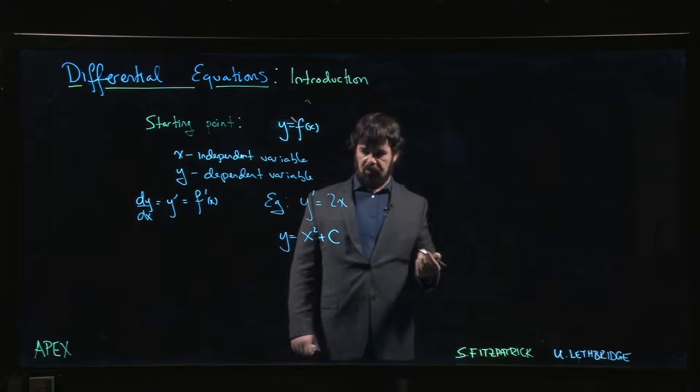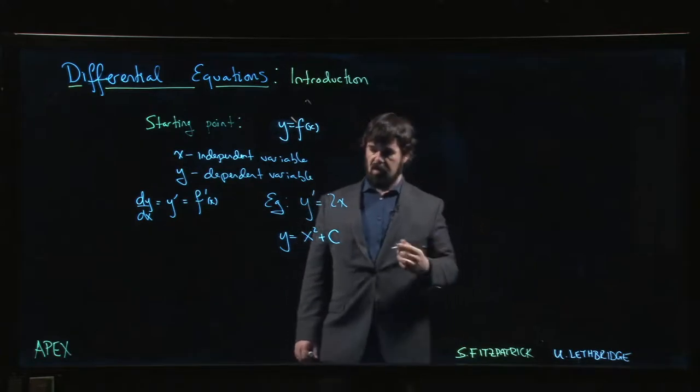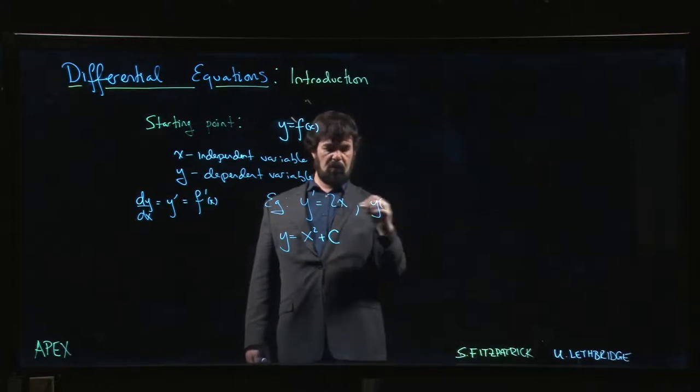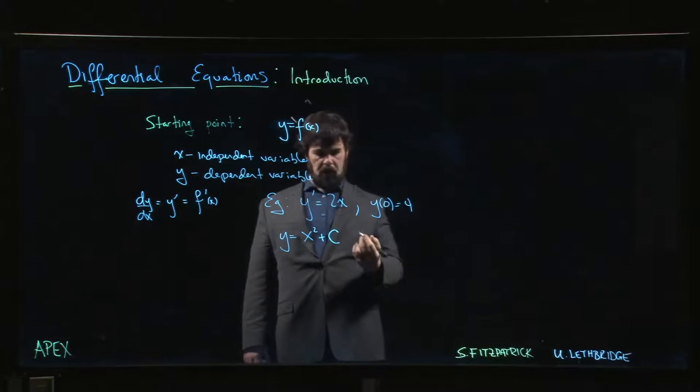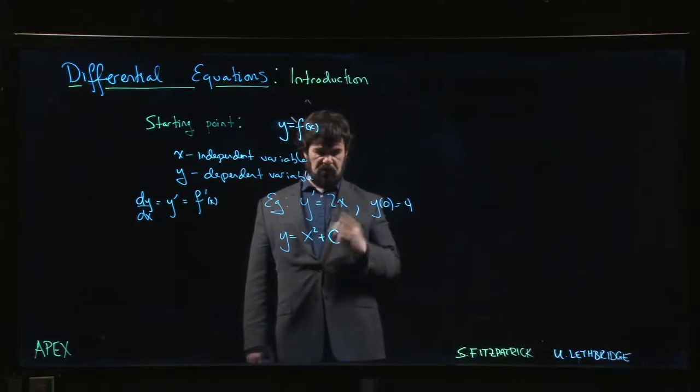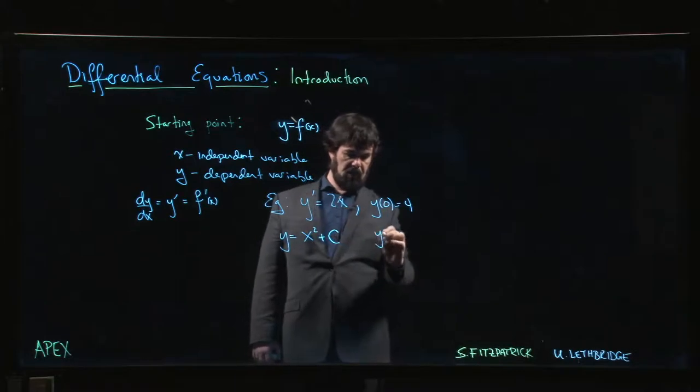We often will impose what are called initial conditions or initial values. We may say okay, I actually want y of zero to equal four. And then you realize well, when x is equal to zero, y is equal to this constant, so that means I must have y equals x squared plus four.